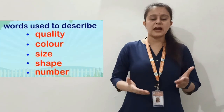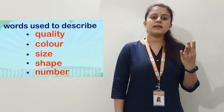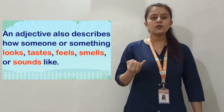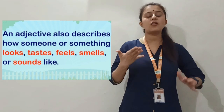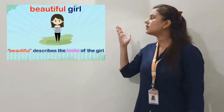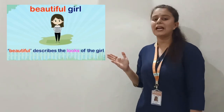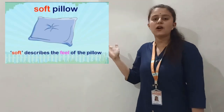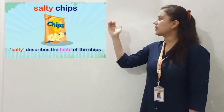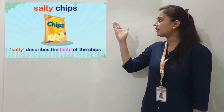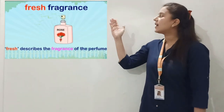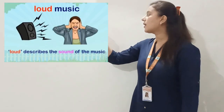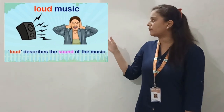Words used to describe quality, size, shape, numbers, and colors are adjectives. An adjective also describes how someone or something looks, tastes, feels, smells, or sounds. For example: beautiful girl — 'beautiful' describes her looks; soft pillow — 'soft' describes the feel; salty chips — 'salty' describes the taste; fresh fragrance — 'fresh' describes the fragrance; loud music — 'loud' describes the sound.